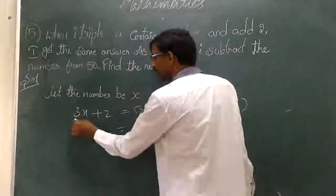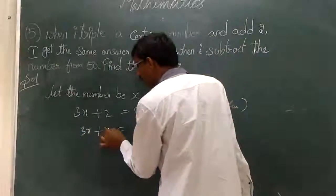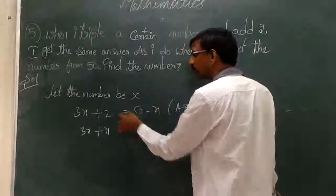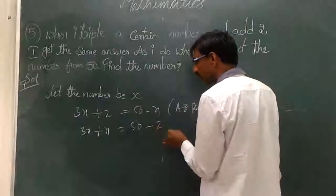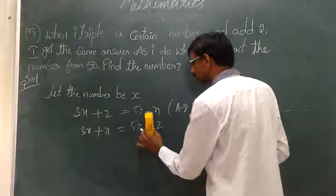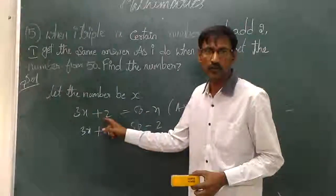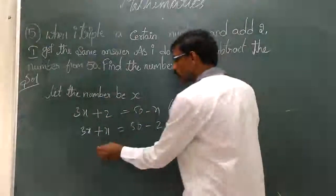I got 3x plus x, this minus will go this side plus, here already we have 50, then it will come this side, minus or plus? Minus. Because here plus 2 will go this side minus.